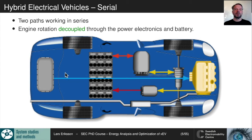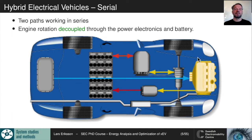In the series hybrid, everything is connected in series: the fuel tank goes to the engine, which drives a generator that pushes electricity into power electronics. The power electronics selects whether to store energy in the battery or send it to the wheels. The engine rotation is decoupled, so we can select the engine speed freely, place it at the most favorable load and speed point, and stop it when not needed.